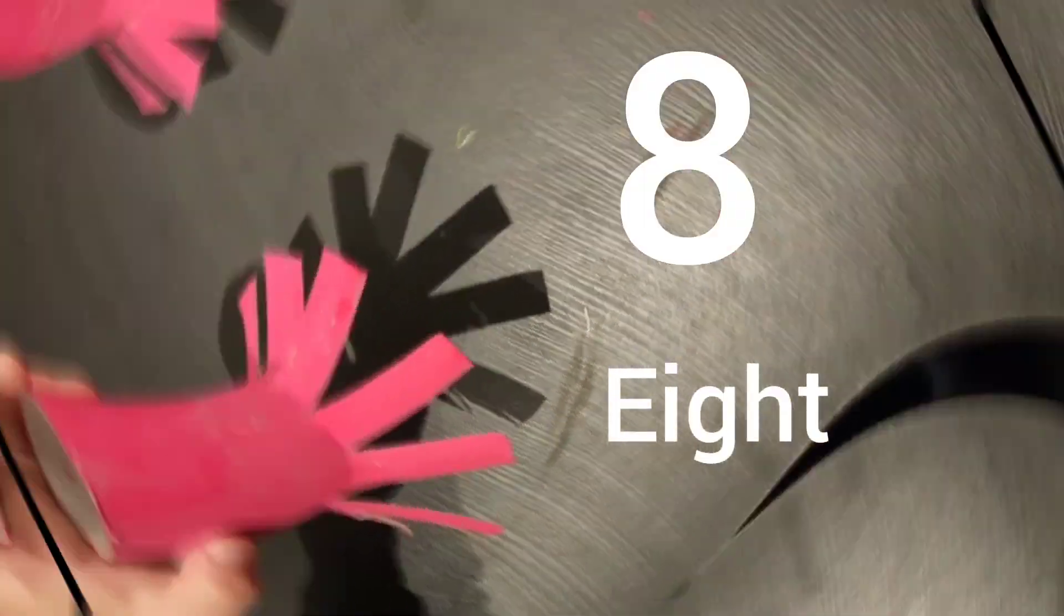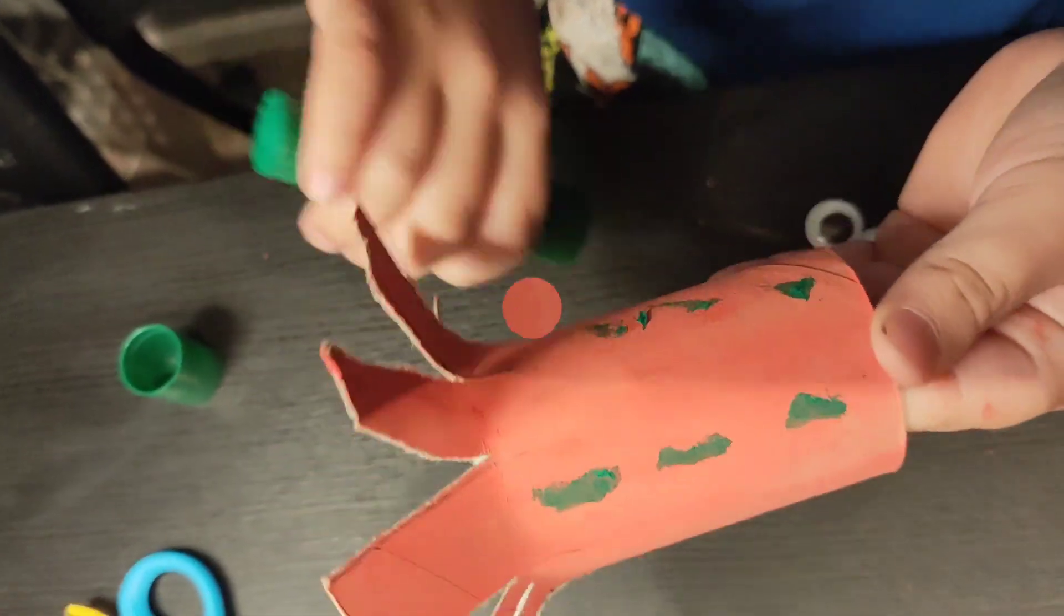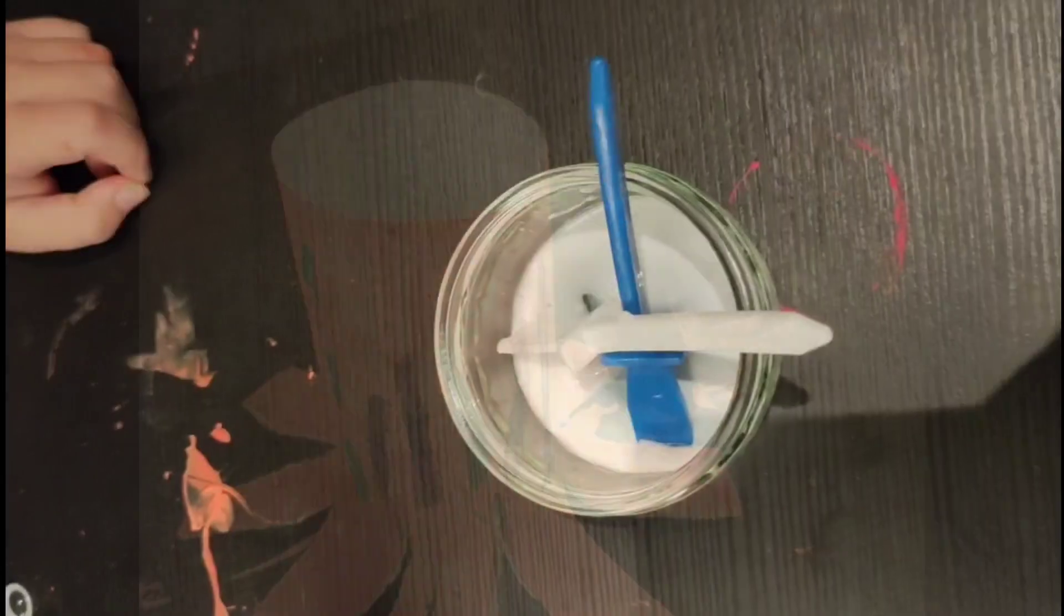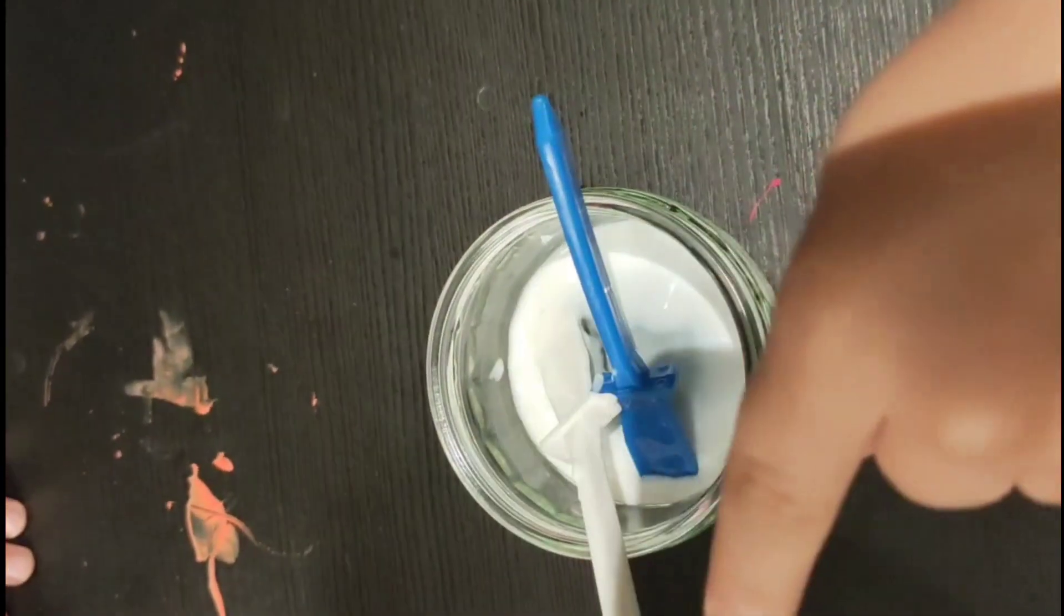Get all decorated now, ready for some eyes. Now we're going to take a little bit of glue with a glue spatula and we're going to glue on our googly eyes.